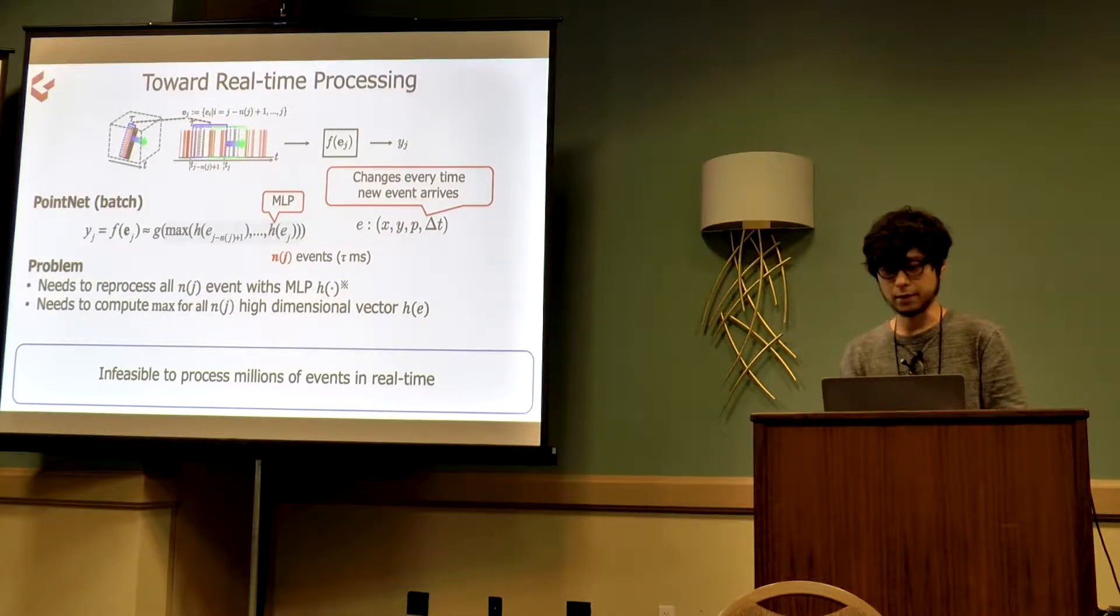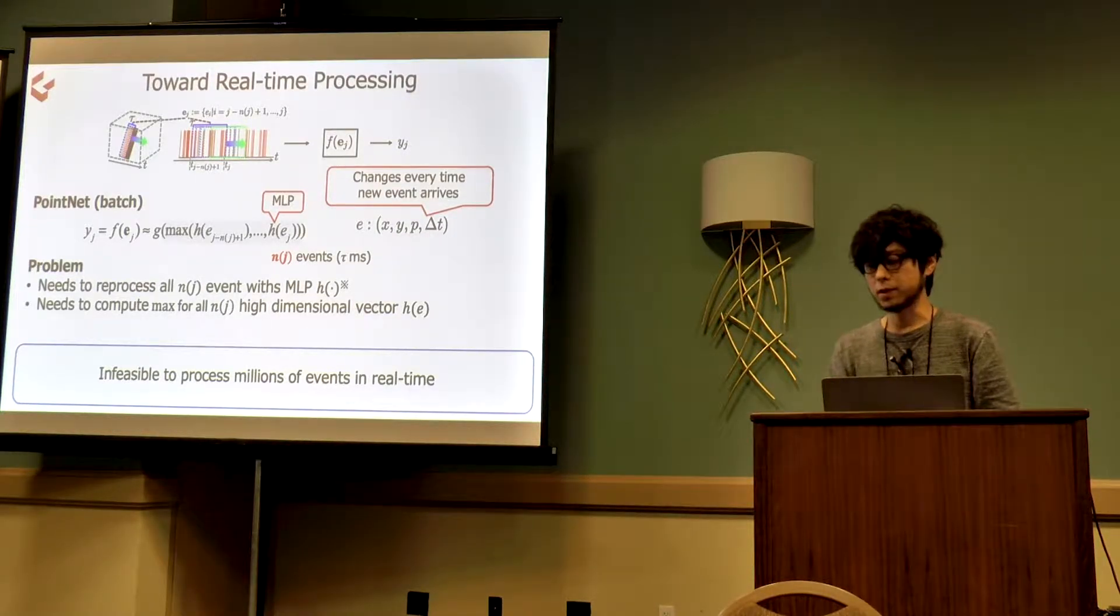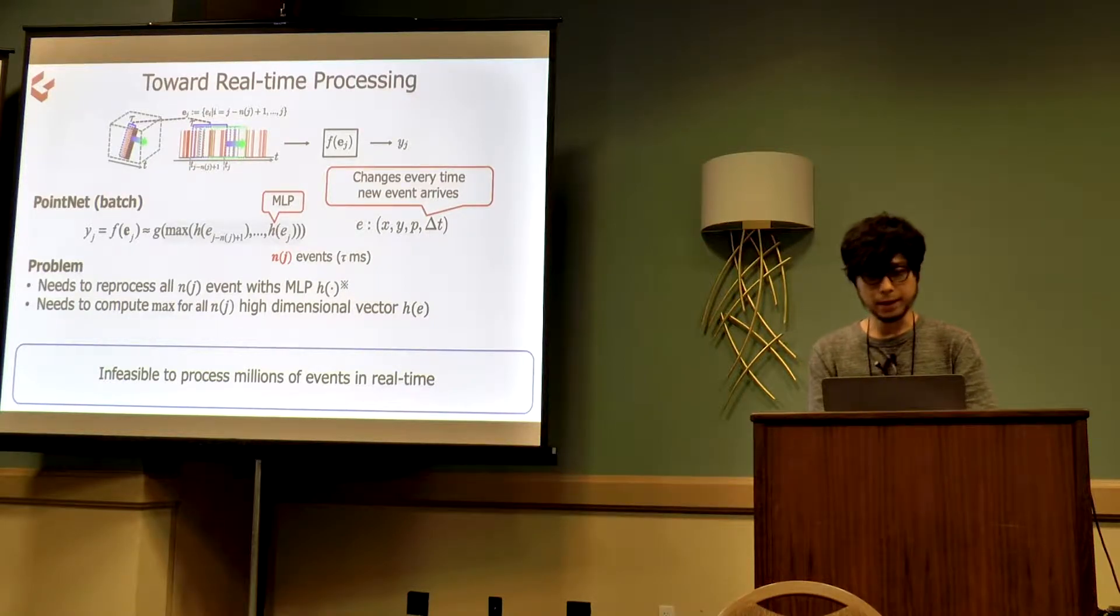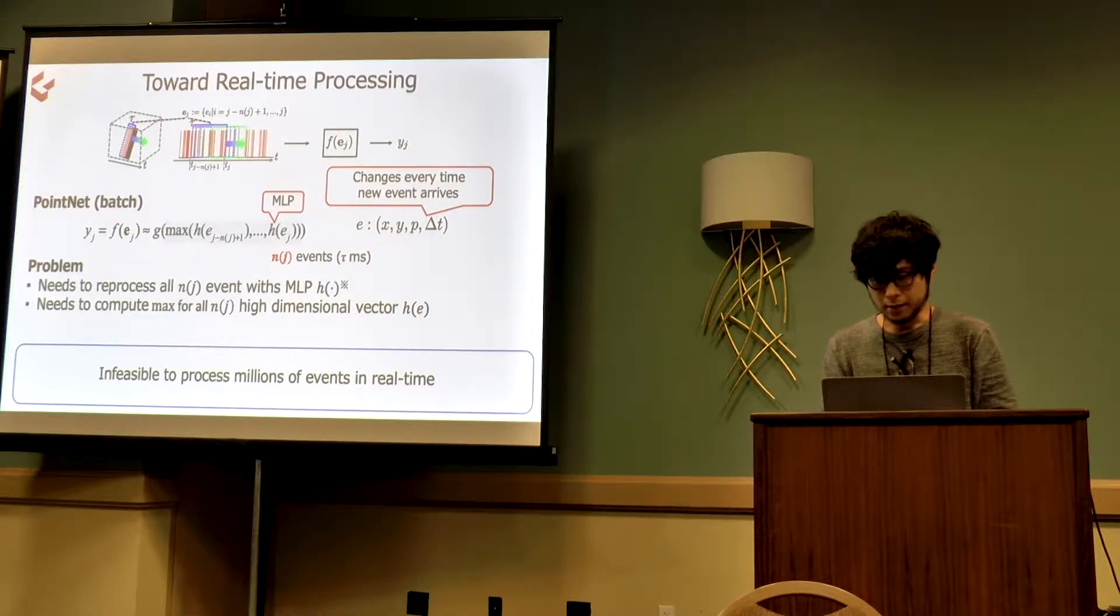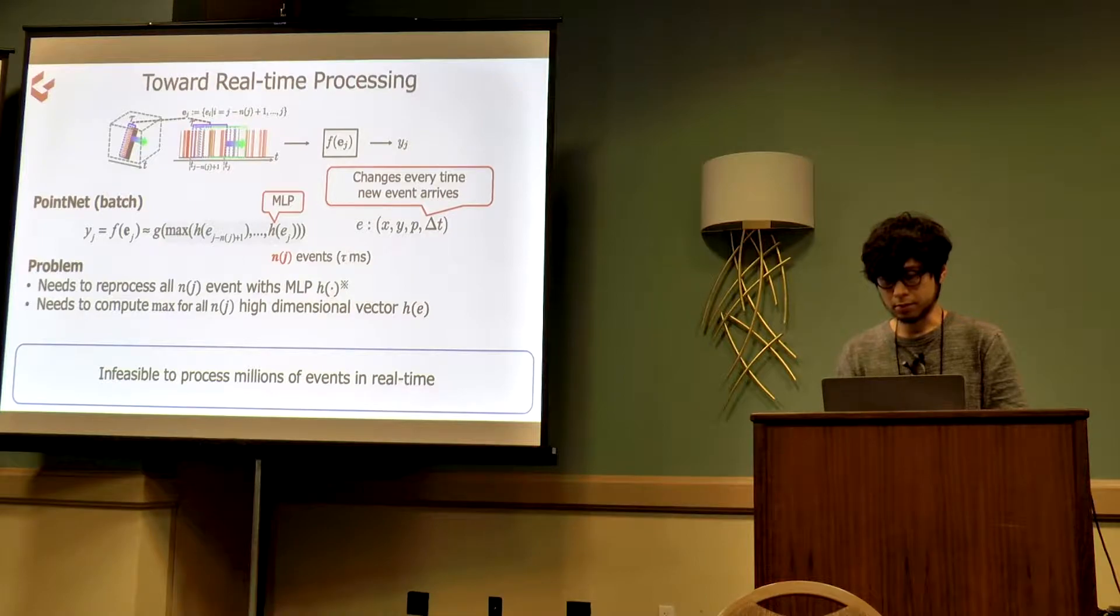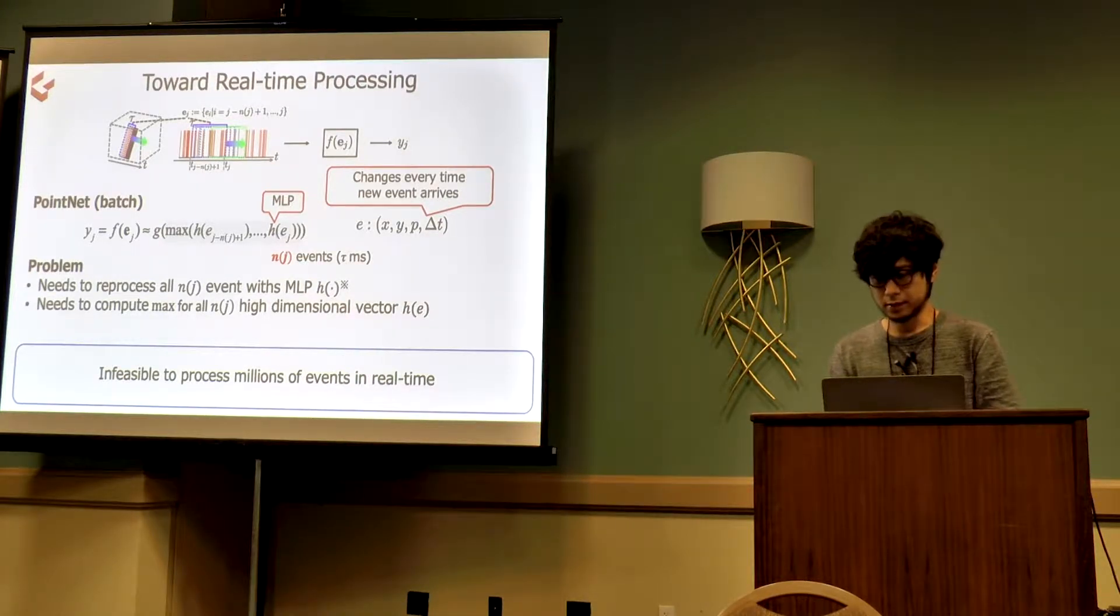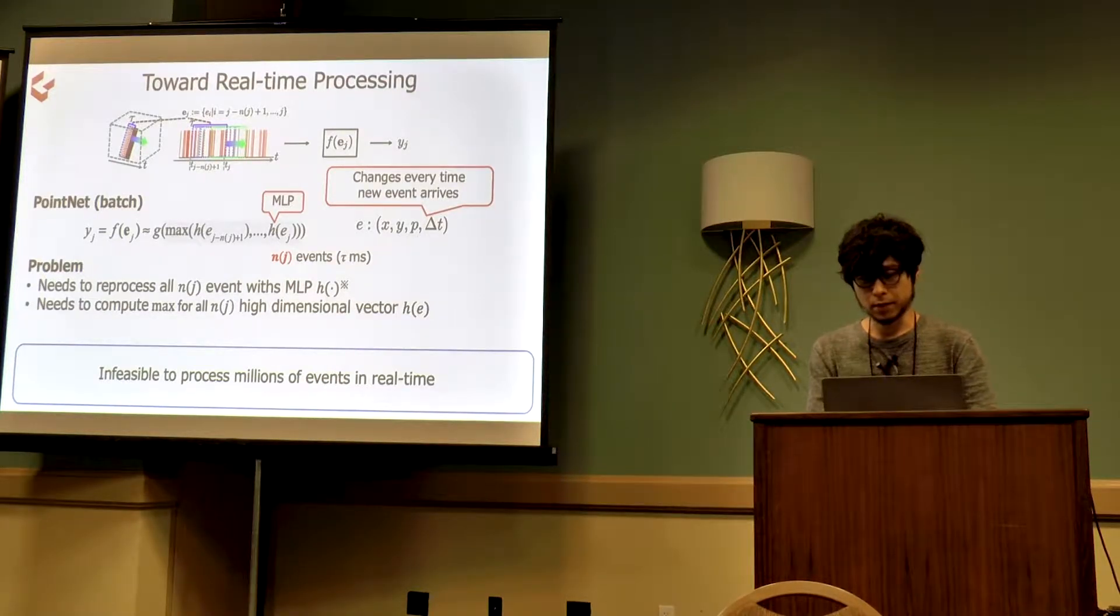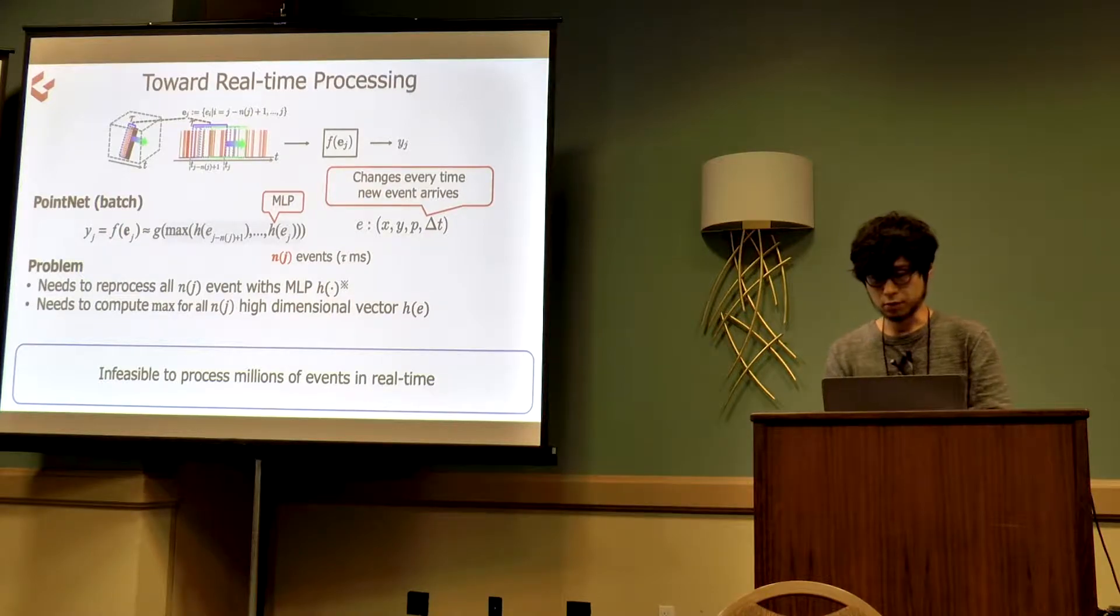More specifically, most of the nj events that have already been processed by MLP H need to be processed again and again using updated delta t as long as it is within a temporal window. And the nj set of high-dimensional vectors, which we need to compute max, changes as new events arrive. The single cycle of this MLP and max operation is itself intensive, since nj may be hundreds of thousands in common scenarios. Furthermore, these two computations should run at event rates, which could be millions per second.